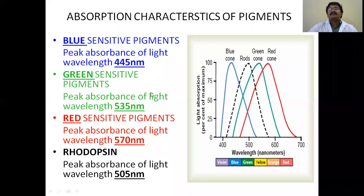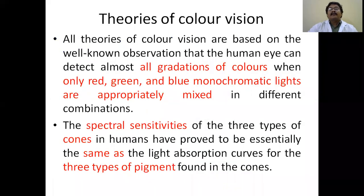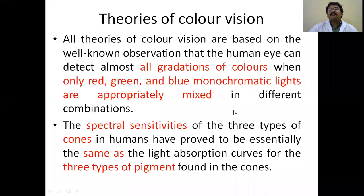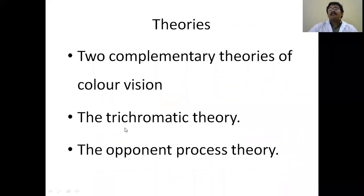All theories of color vision are based on the well-known observation that the human eye can detect almost all gradations of color when red, green, and blue monochromatic lights are mixed in different combinations. The spectral sensitivity of the three types of cones is due to the light absorption curves of the three different pigments — cyanolabe, erythrolabe, and chlorolabe. The two complementary theories are the trichromatic theory and the opponent process theory.